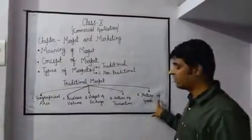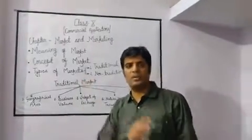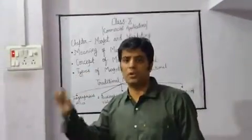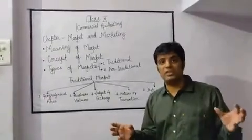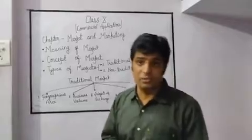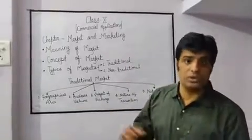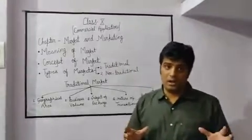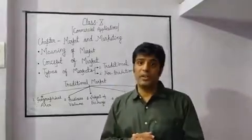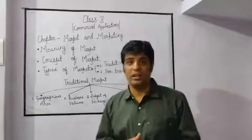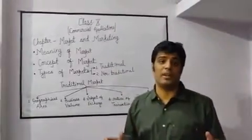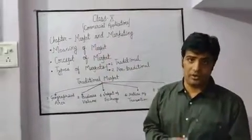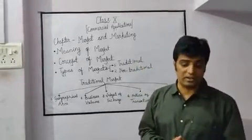And last but not the least, nature of goods. That are also being divided in two parts. One is consumer goods, second is producer goods. Consumer goods means the goods which are directly consumed by any consumer. Like I am buying a shampoo for my use. This is called consumer goods. But producer goods are those goods which are used by the producers, like machineries. Different machineries are purchased by different producers for further production, for production of different other goods. That is called producer goods.